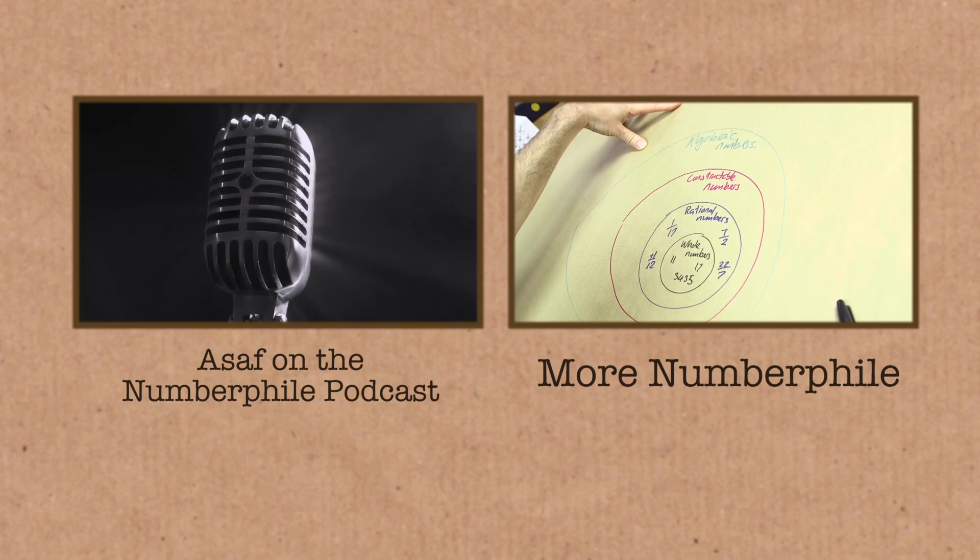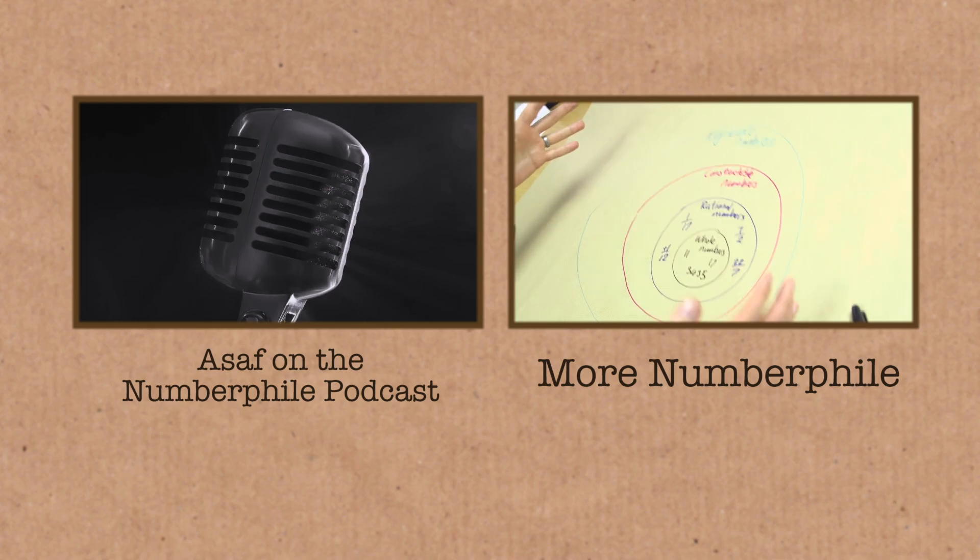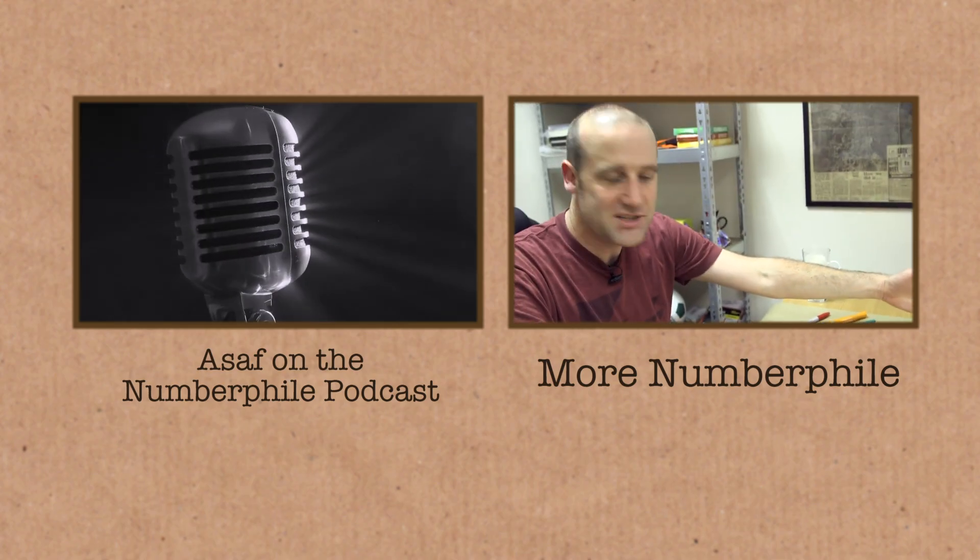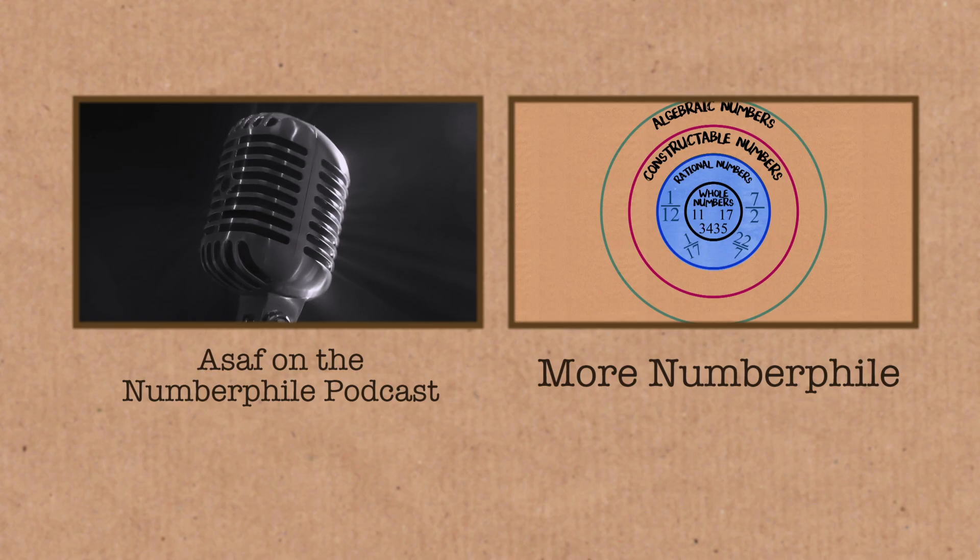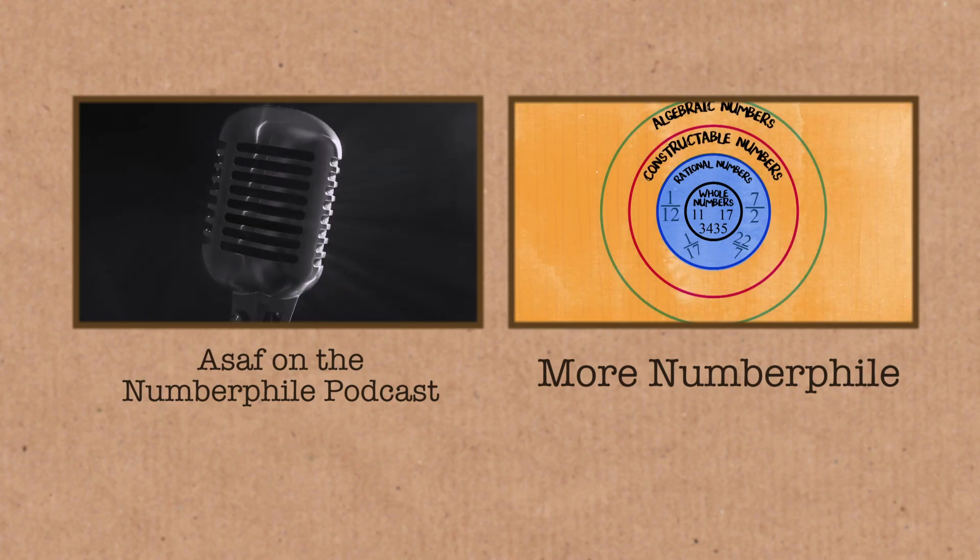Transcendental numbers. And so a lot of the number categories refer to in or out of these different sets. So rational numbers are everything inside the blue line. Irrational numbers are everything outside the blue line.